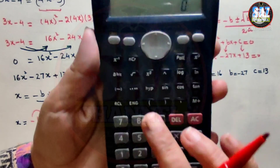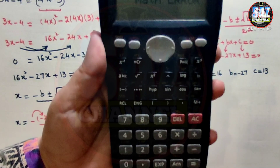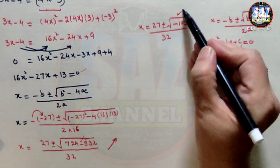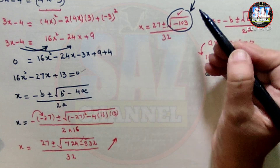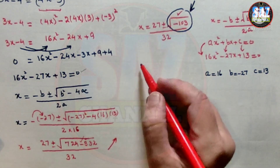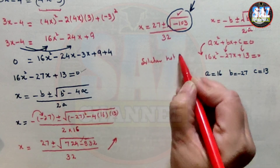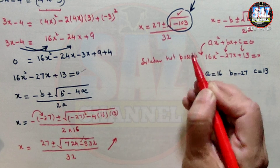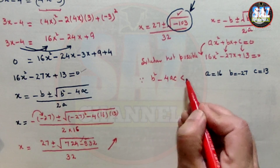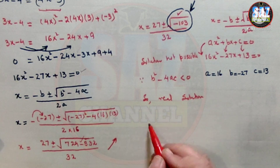When we take the square root of negative 103, that gives a math error. For situations where the expression under the square root sign is negative, we cannot solve further. So we simply write: solution not possible. The reason is that b squared minus 4ac is less than 0, giving no real solution — only complex roots.